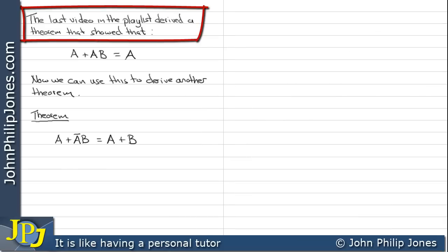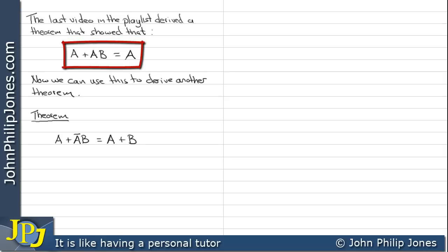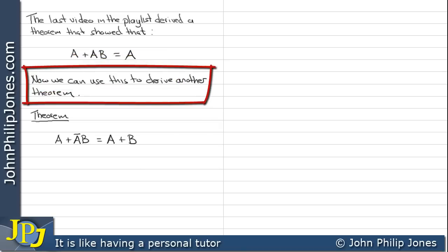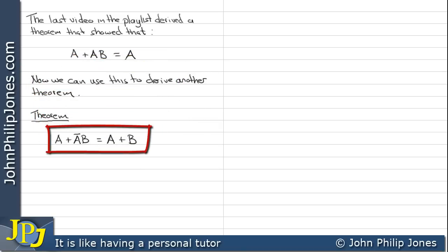The last video in the playlist derived a theorem that showed that A or A and B can be minimized to A. Now we can use this theorem to derive another theorem, which is that A or not A and B can be minimized to A or B.